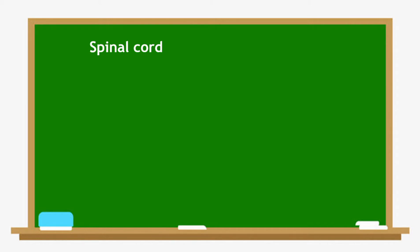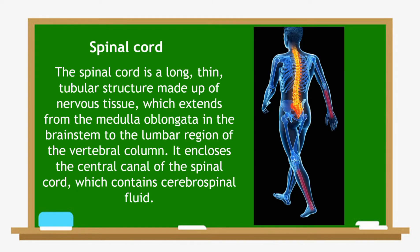Next, we have the spinal cord. The spinal cord is a long, thin, tubular structure made up of nervous tissue, which extends from the medulla oblongata in the brain stem to the lumbar region of the vertebral column. It encloses the central canal of the spinal cord, which contains cerebrospinal fluid.